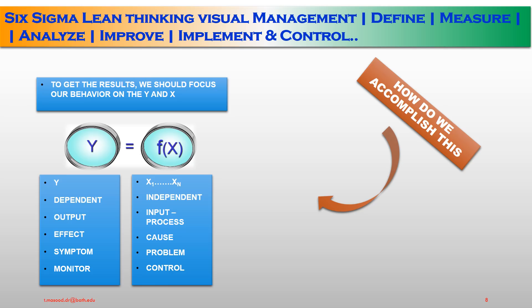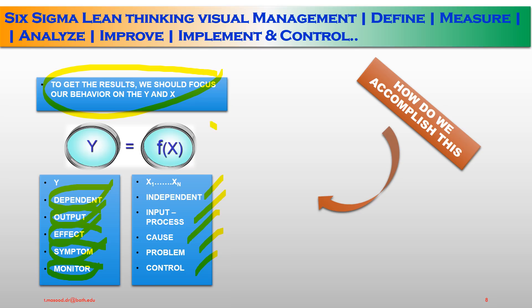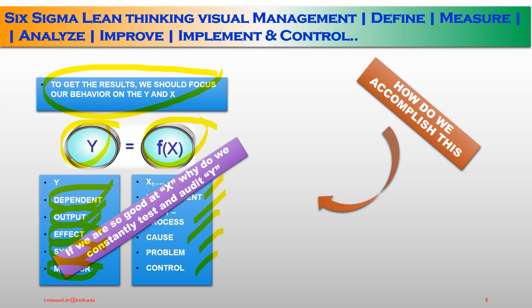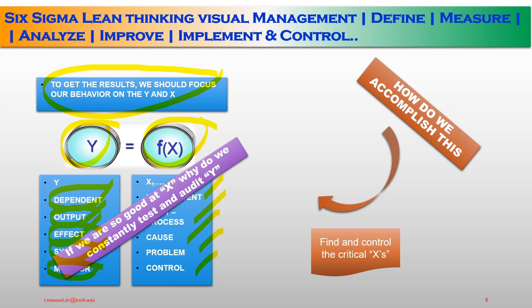How do we accomplish this? To get the output Z, we should focus our behavior on the X and Y elements. The Y variables are: dependent, output, effect, substance, and monitor — these are 5 segments. Similarly, X has 5 variables: independent, input process, cause, problem, and control. The process carried over on this area will be equal to Y. These are the Y parameters and X parameters as a function of F. If we are so good at X, why do we constantly test and audit Y values? We need to find the control of the critical axis.